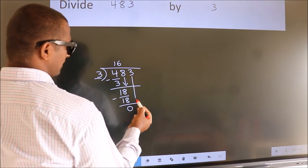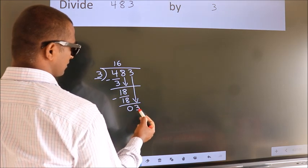After this, bring down the beside number. So, 3 down. So, 3.